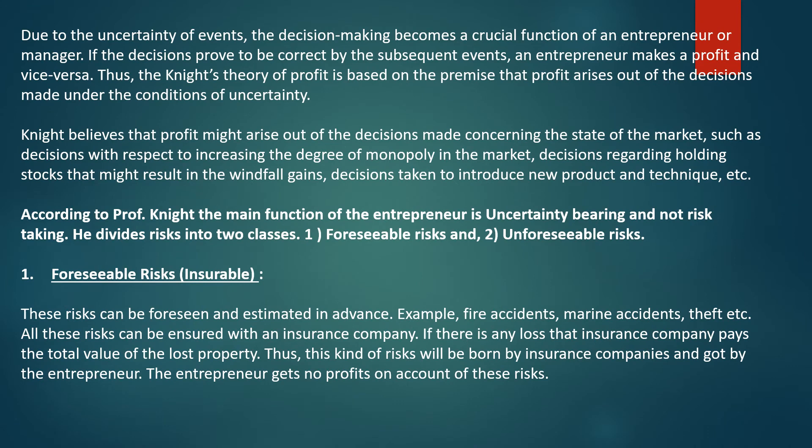Due to the uncertainty of events, decision-making becomes a crucial function of an entrepreneur or manager. If the decision proves to be correct by subsequent events, the entrepreneur makes a profit, and vice versa. Thus, the Knight Theory of Profit is based on the premise that profit arises out of decisions made under conditions of uncertainty.